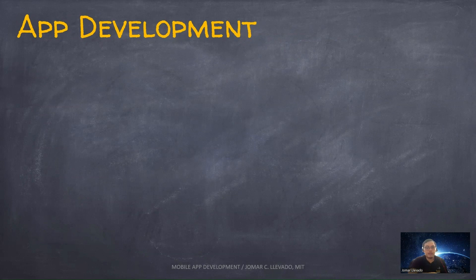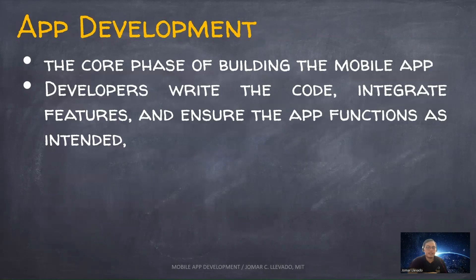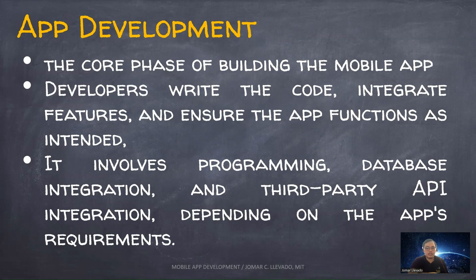App development is the core phase of building the mobile app. Developers write the code, integrate features, and ensure the app functions as intended. It also involves database integration and third-party API integration depending on the app's requirements. This is typically the longest phase of the entire mobile app development process.